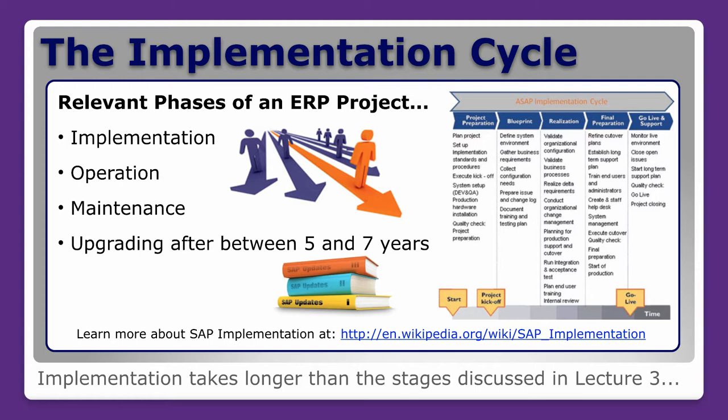The realization phase is about validating the configuration chosen, checking that business processes now work in the new format, looking at any changes in requirements that may have occurred, conducting organizational change management, planning for production support and cutover. Cutover is where you start transitioning from the old system to the new one. You also run integration and acceptance testing, plan end-user training, and review how well it all went.